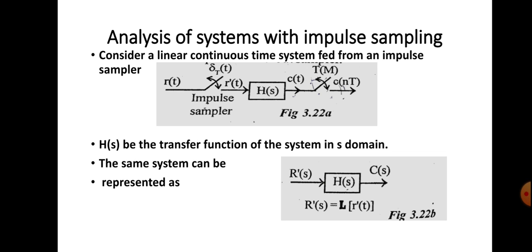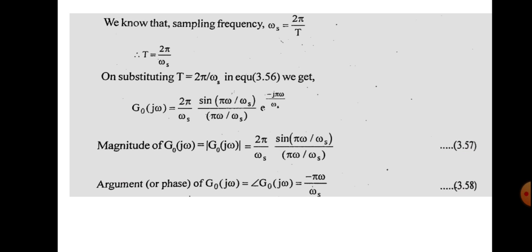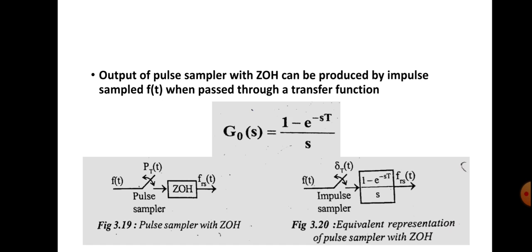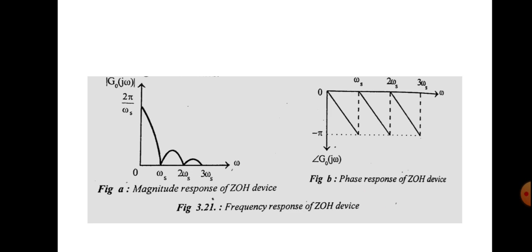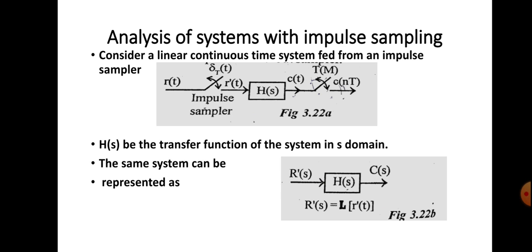Next we can analyze systems with impulse sampling. In the previous session we went through the impulse sampler. Instead of pulse sampling, we are using an impulse sampler here. A pulse sampler has a short duration, but an impulse represents infinite amplitude for a short duration. In the case of using an impulse sampler, we get different samples at different instances of time with different values.